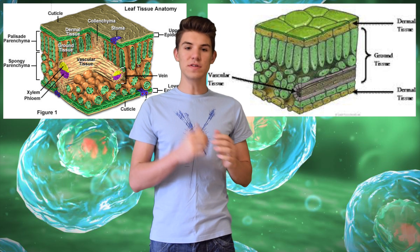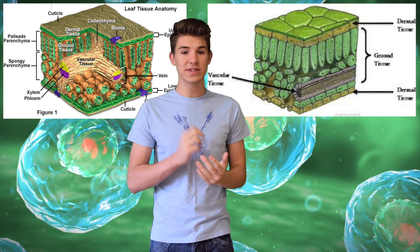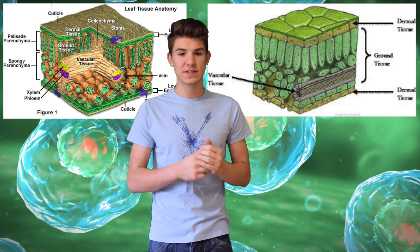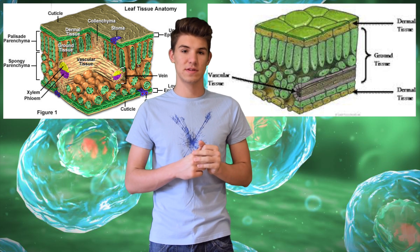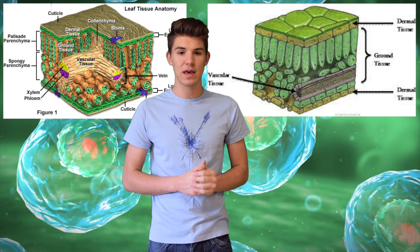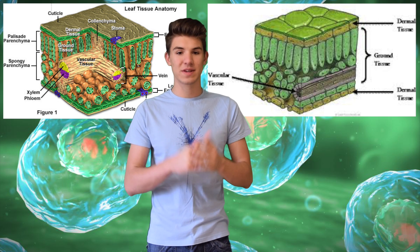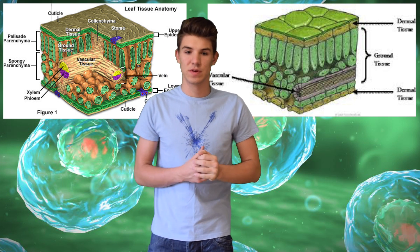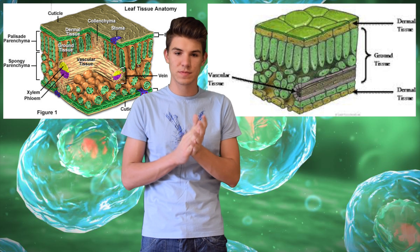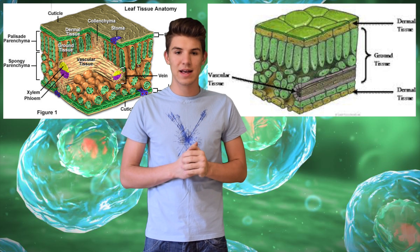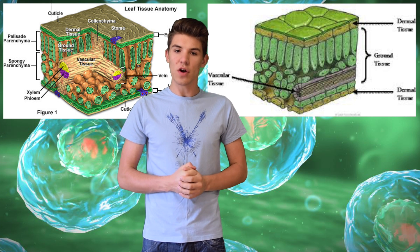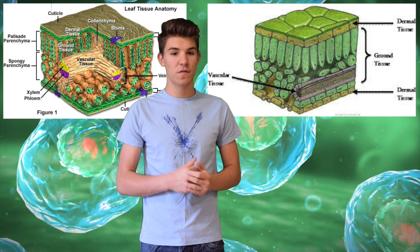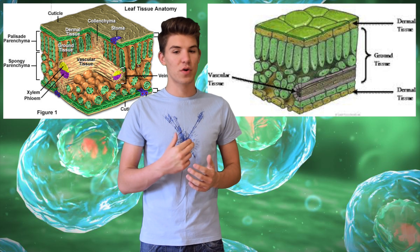The final tissue type in this video is the vascular tissue, which is responsible for transporting water and dissolving substances. This is the one you've probably heard the most about. It is composed of xylem and phloem tissues. The xylem tissue transports water and dissolved minerals, while the phloem tissue transports food and other organic substances.